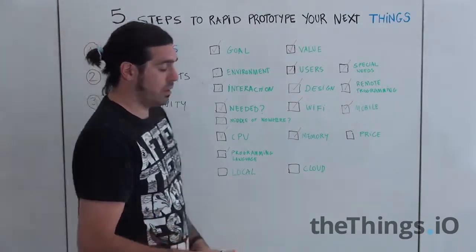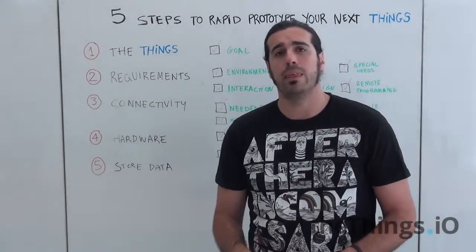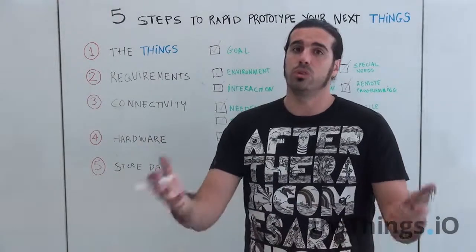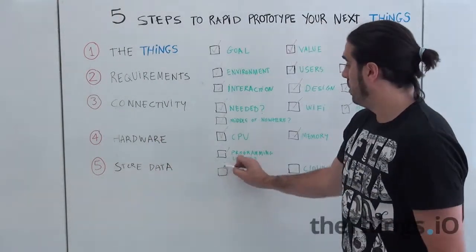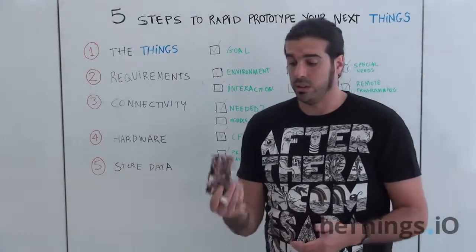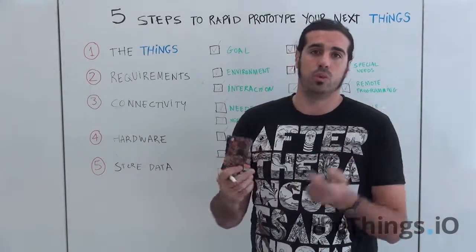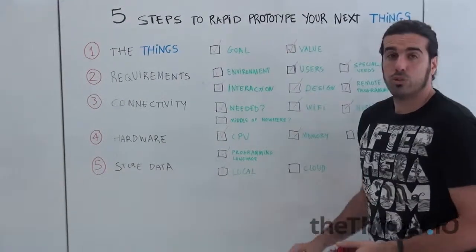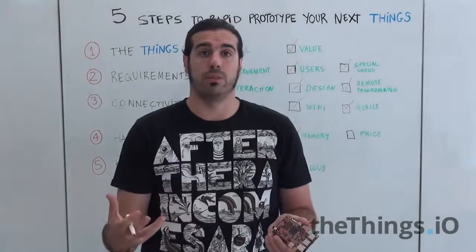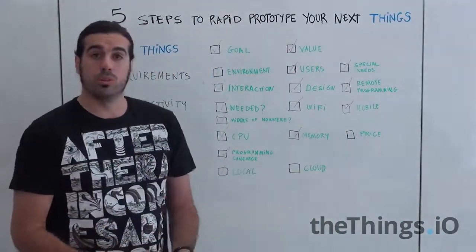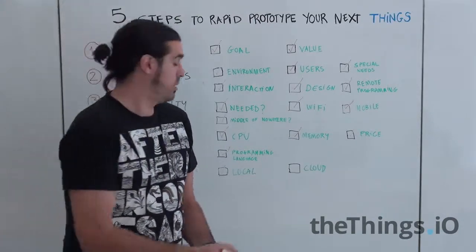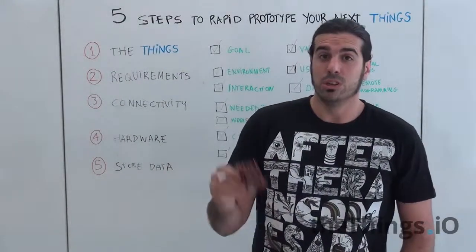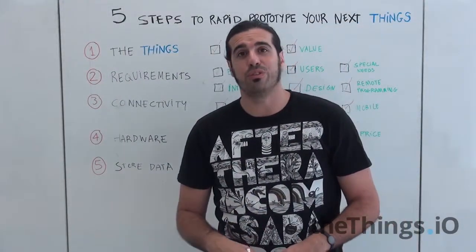The fifth and final step is where do you want to store the data. If your thing generates data, you can store it locally — for example using an SD card — and retrieve it later. Or you can store it in the cloud. There are platforms like Things.io that help you store data to the cloud. Take that into account when you rapid prototype your next thing. That's all — see you in the next edition of IoT Friday, bye!